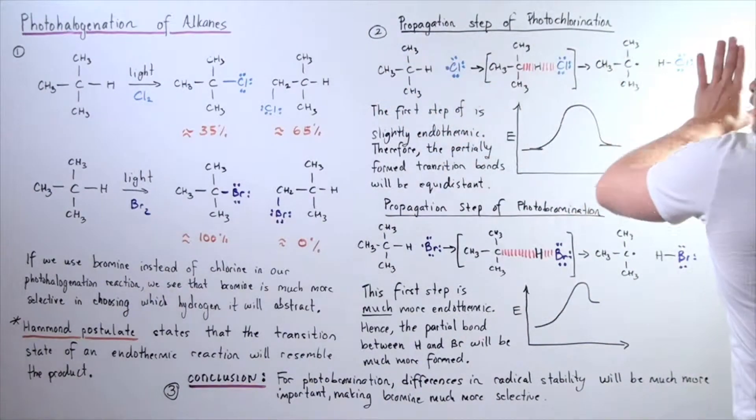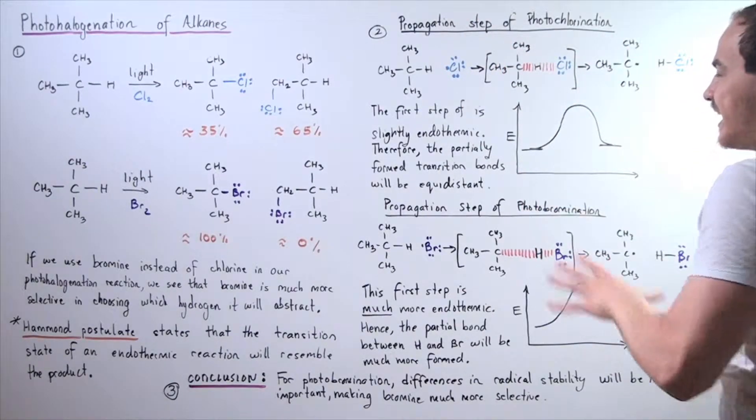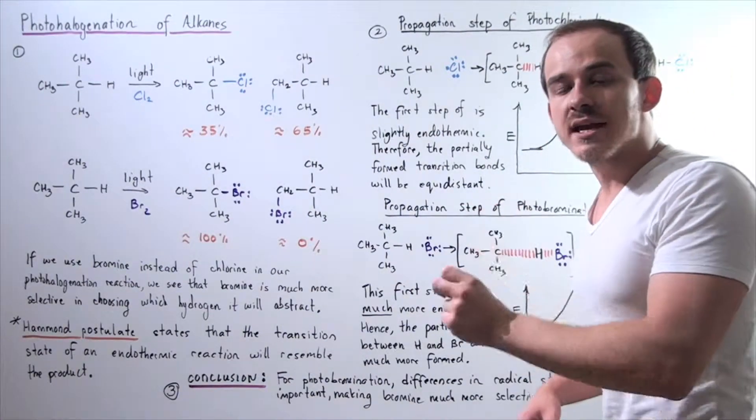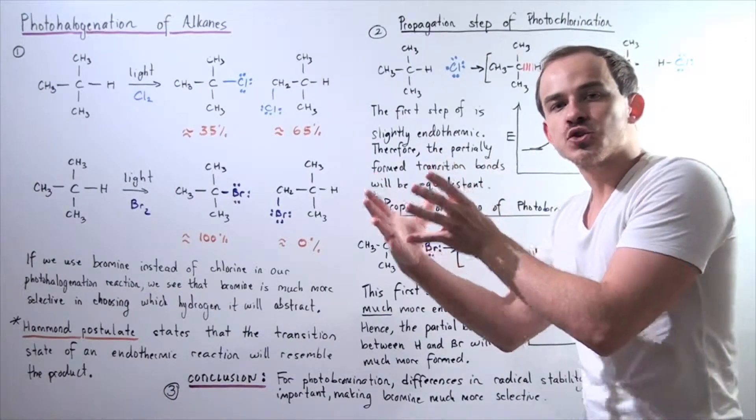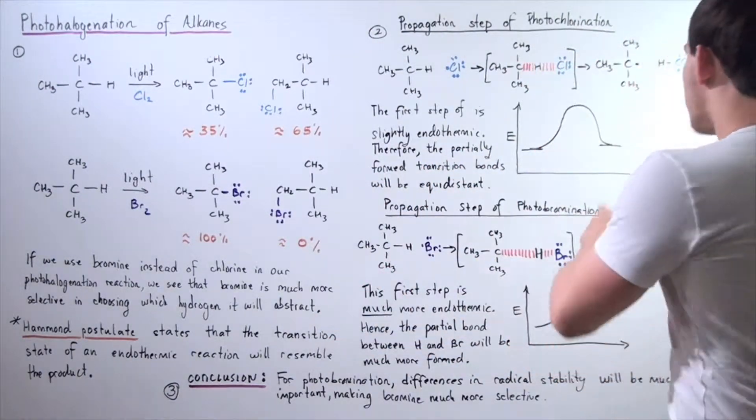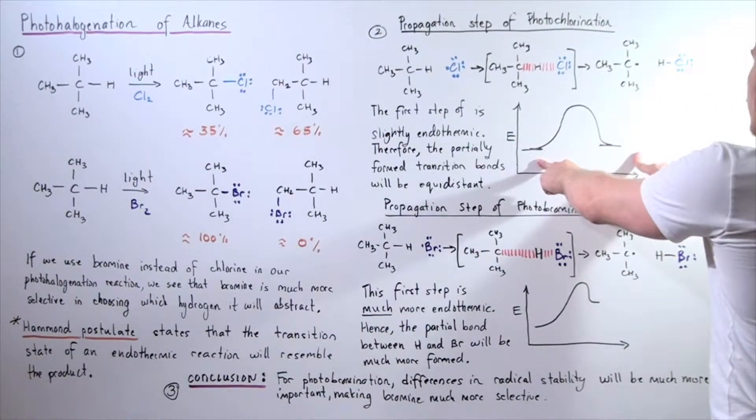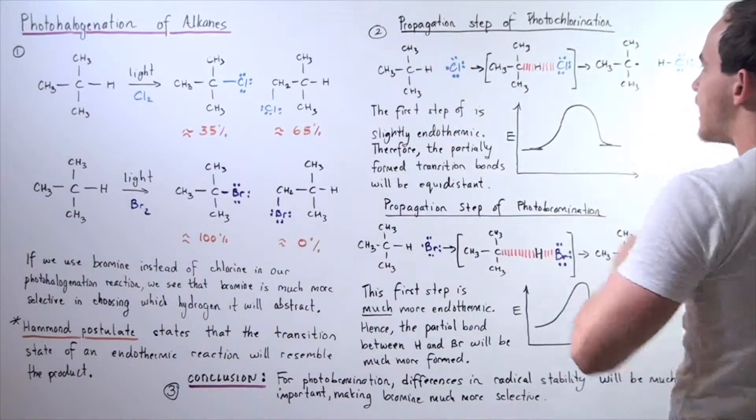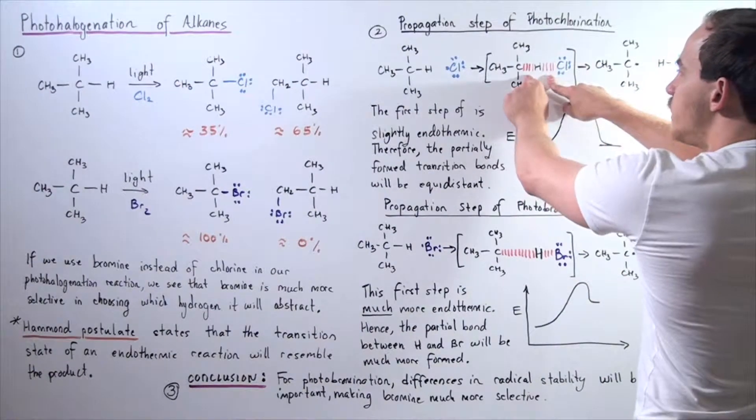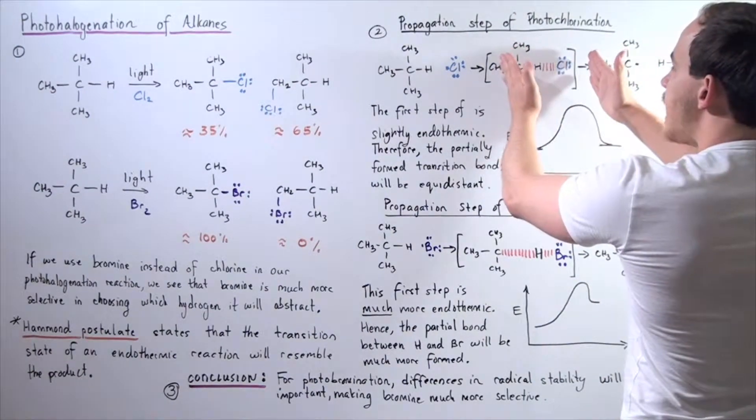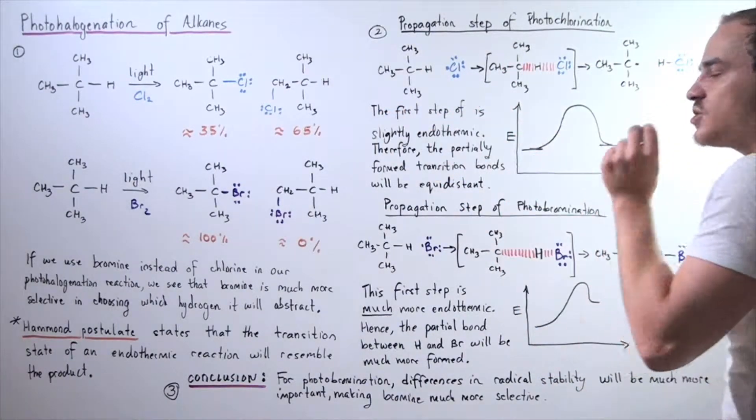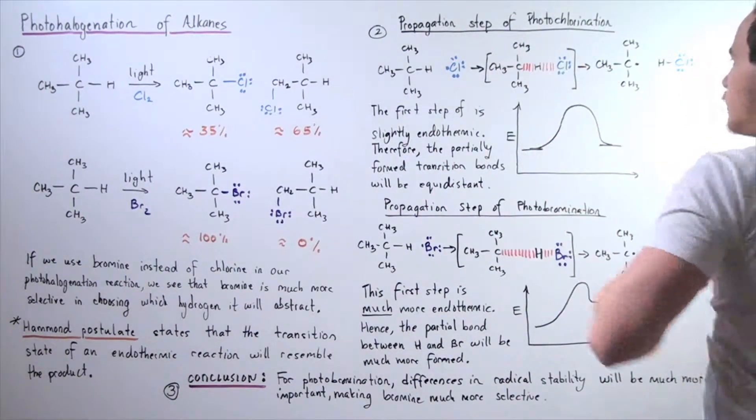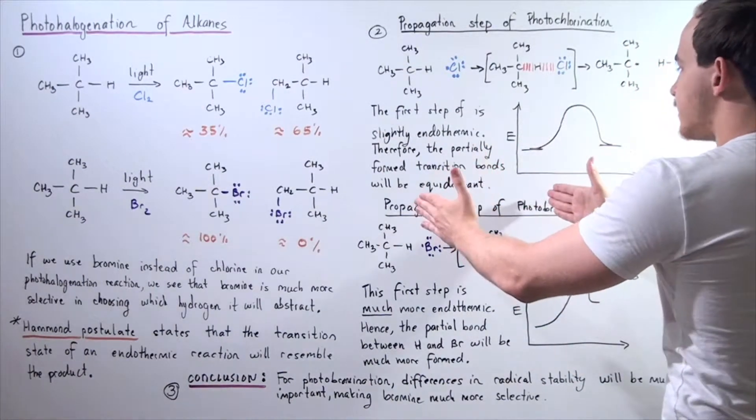Now, this step, the first step of the propagation step in photochlorination is slightly endothermic. And that means because it's only slightly endothermic, our transition state structure will resemble that of our starting materials and our final product. It will be somewhere in between. So, if we examine our transition state, these two partially formed bonds and partially broken bonds will be at about the same stage. Once again, the first step is only slightly endothermic. Therefore, the partially formed transition bonds and the partially broken transition bonds will be equidistant.